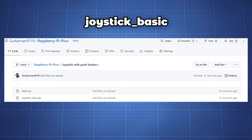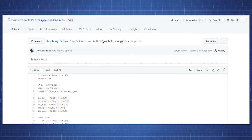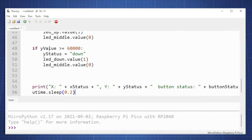In my GitHub repository copy the code from joystick_basic. Open a new file in Thonny and paste the code.